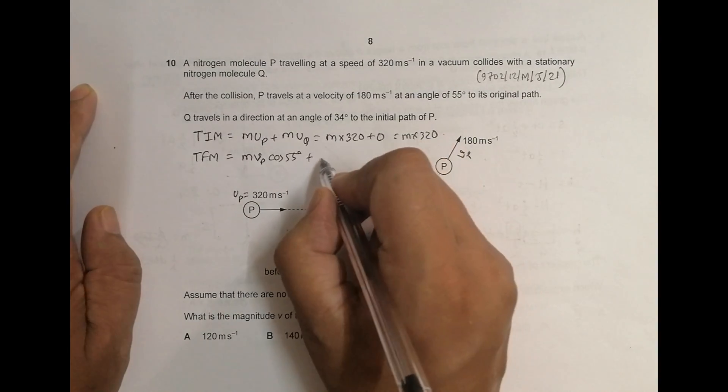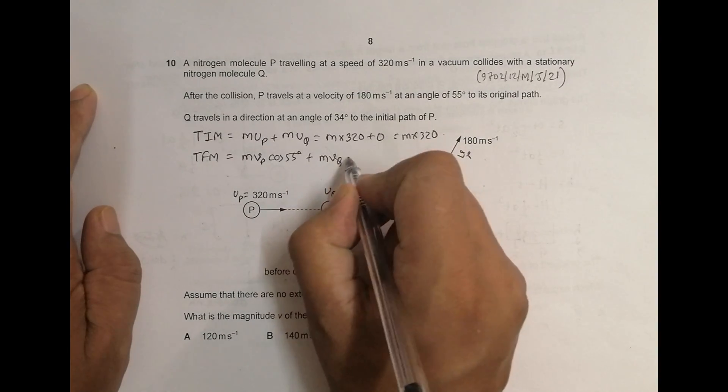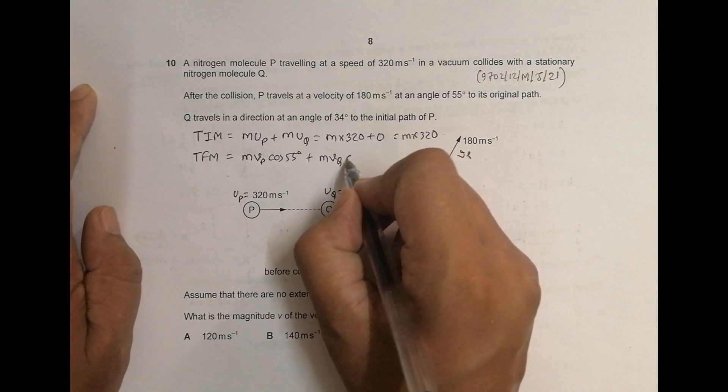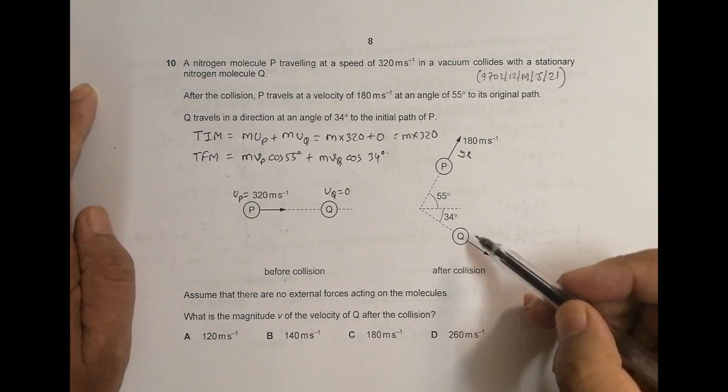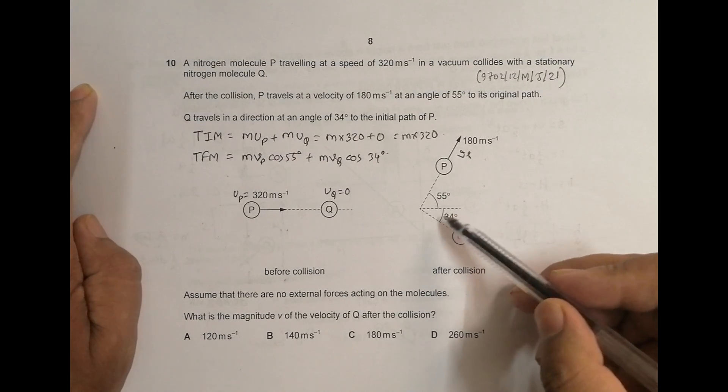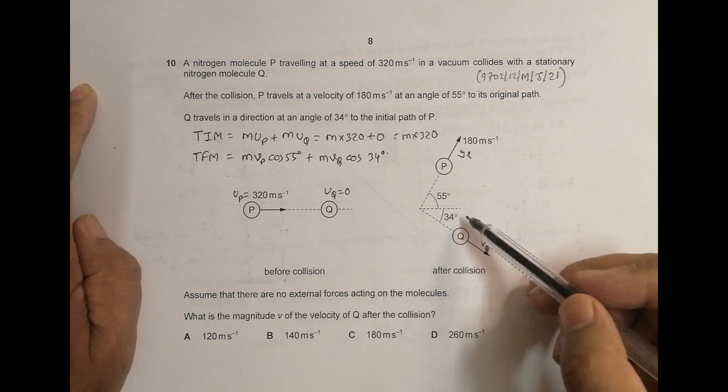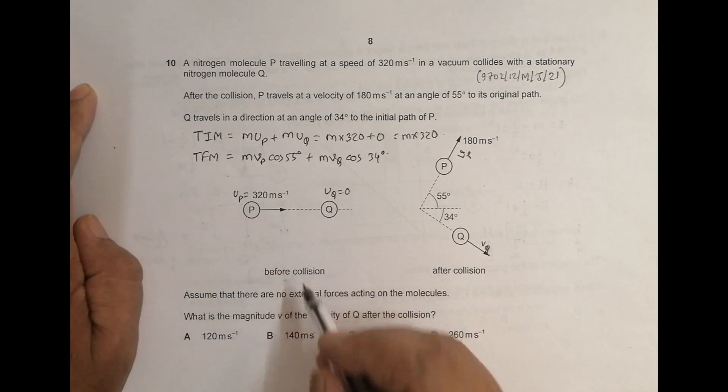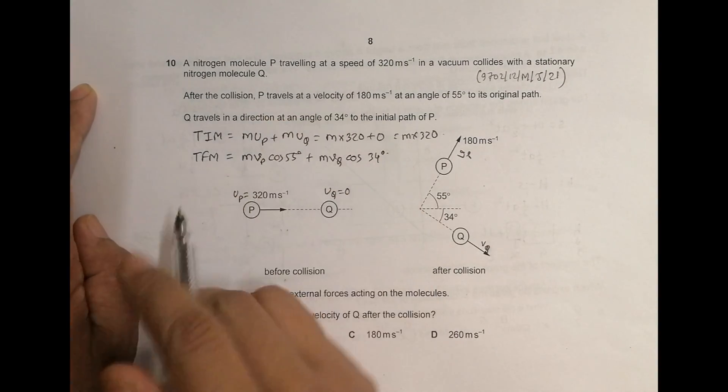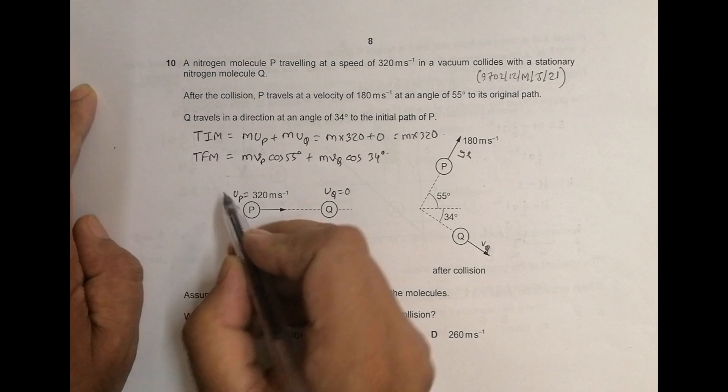it will have mass into V Q and again cos, again cos, it is 34 degrees. So we are taking both cosine because we are having the component in the direction with the angle. So that is why both cos. Now in this direction, the total momentum should be same, should be constant. So that is why we must have,